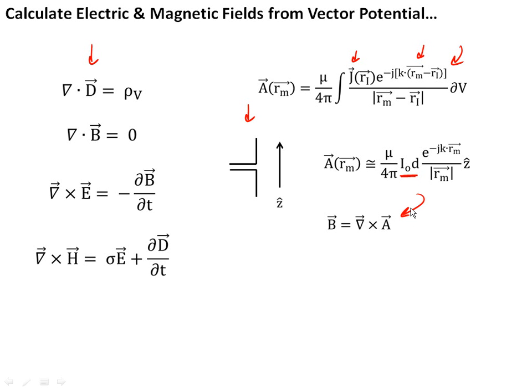Once we make this approximation to the magnetic vector potential, we can take the curl of this expression to calculate the magnetic flux vector. Once we get the magnetic flux vector, we can take the temporal derivative and relate that to the curl of the electric field. A lot of algebra, and so rather than go through it, I'm just going to give you what those fields are.